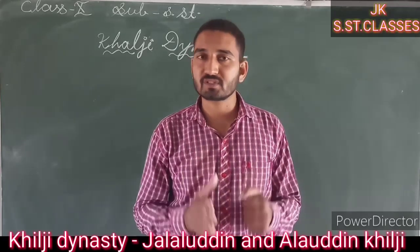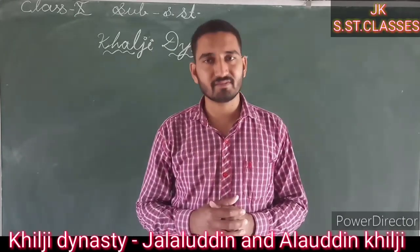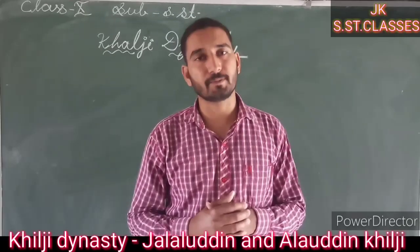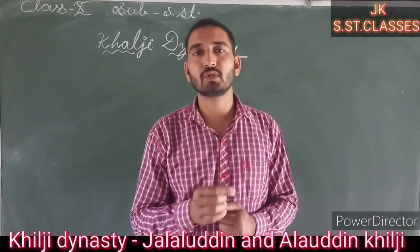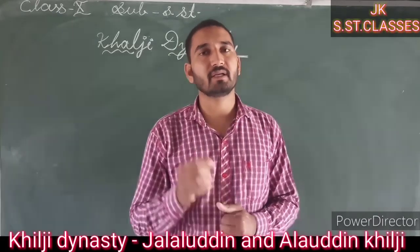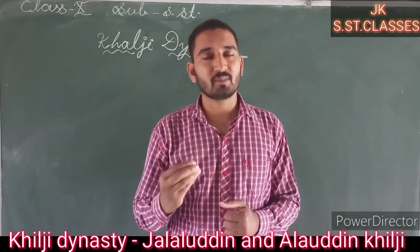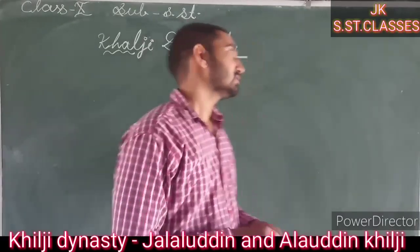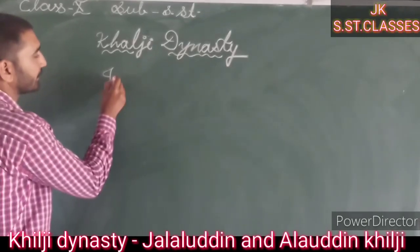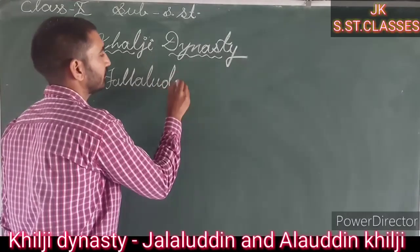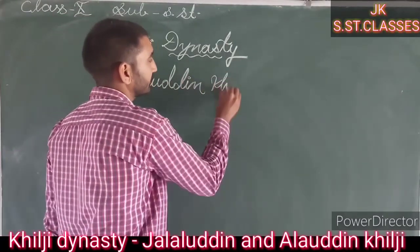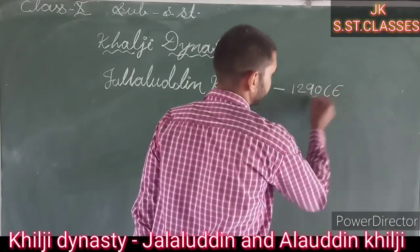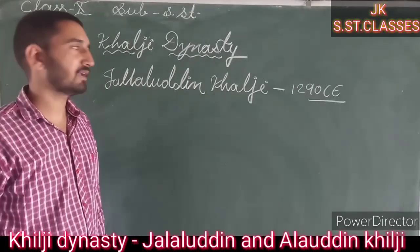The next major dynasty of Delhi Sultanate, established by demolishing the Slave dynasty, is the Khalji dynasty. This dynasty was established by Jalaluddin Khalji in 1290 CE. The last ruler of the Slave dynasty was Khusrau, who was assassinated by Jalaluddin Khalji, and in this way Jalaluddin Khalji established the Khalji dynasty, founded in 1290 CE.